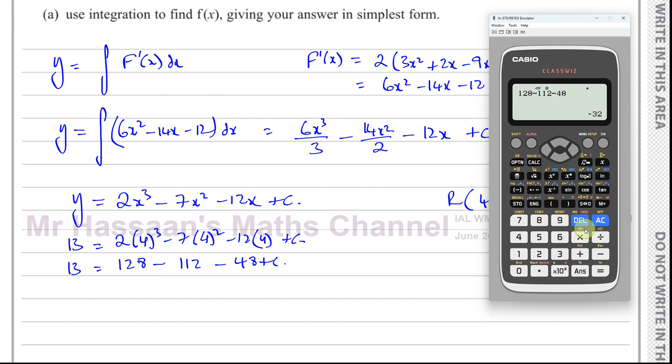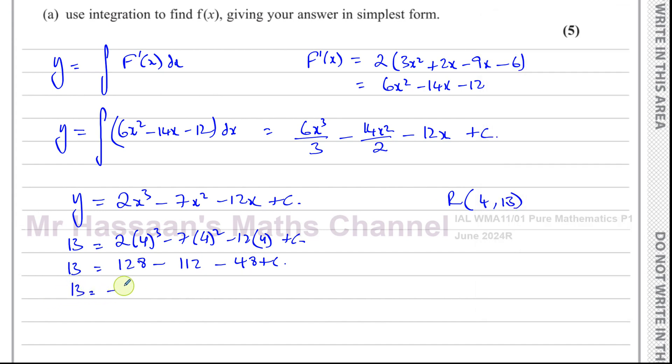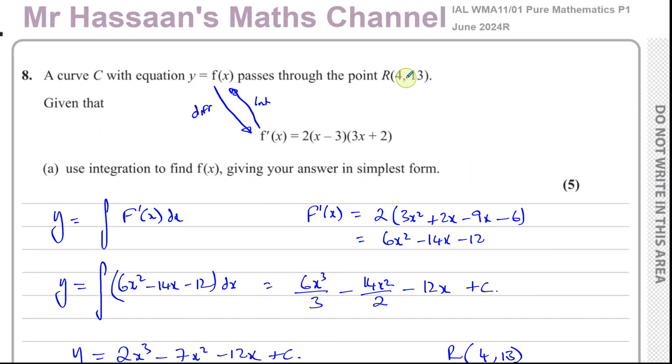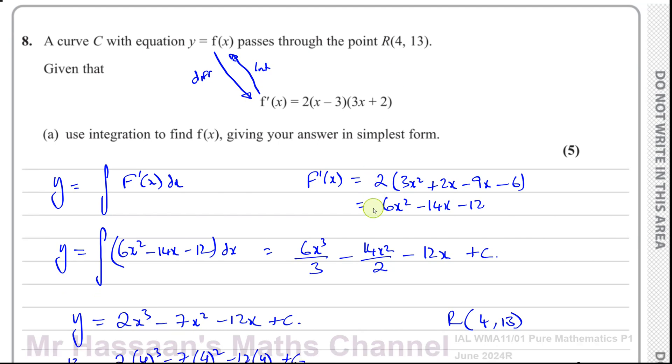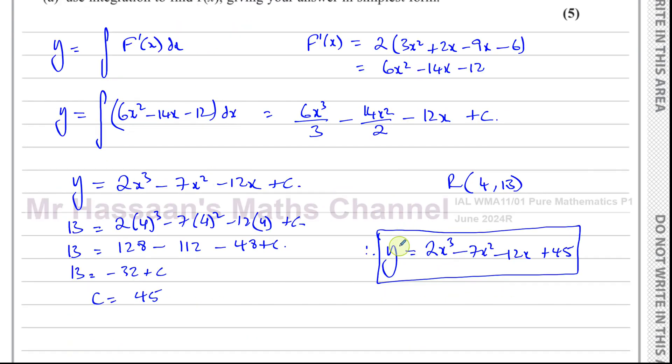So you have 13 equals minus 32 plus c. So c is going to be 13 plus 32, that's going to be 45. Therefore we can say y equals 2x³ minus 7x² minus 12x plus 45. That is the equation of our original curve after we integrated its gradient function and plugged in the value of the point that it passes through. And there's the answer to part A.